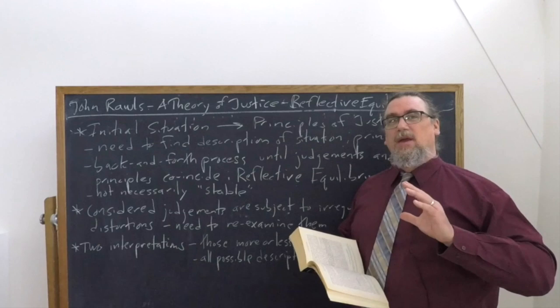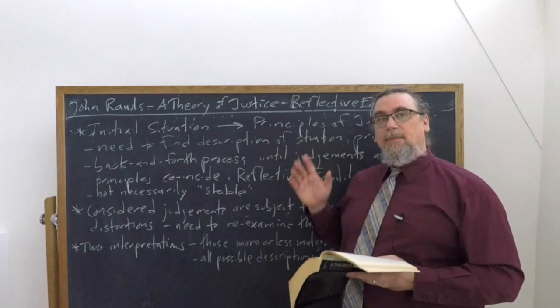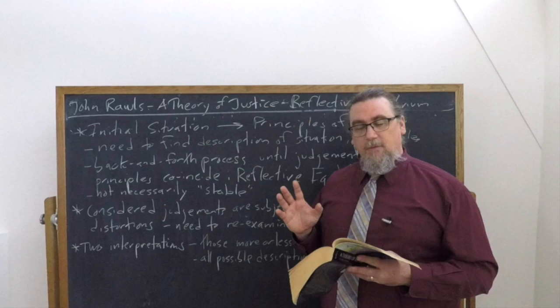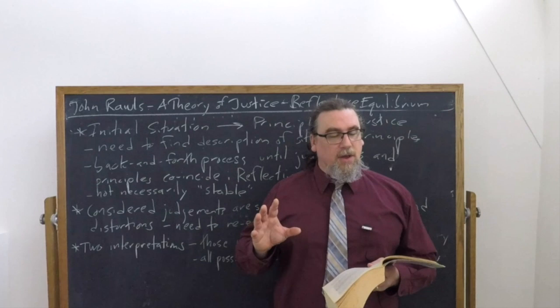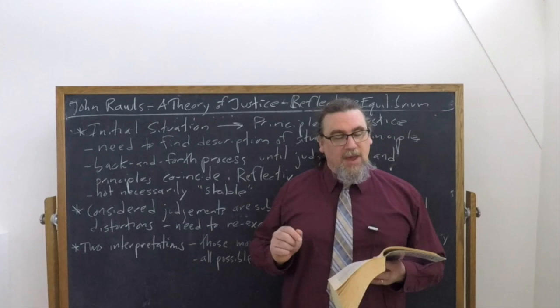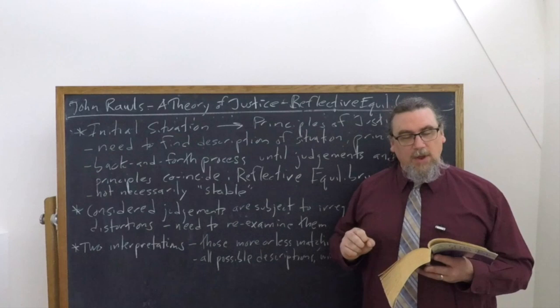He says that when it comes to deciding precisely how authority and income or goods ought to be justly distributed, it's tough to decide in an abstract a priori manner — we have to work this out through the application of the theory. So in searching for the most favored description of the initial situation, we work from both ends. We begin by describing it so it represents generally shared things we can all agree on and preferably weak conditions. We then see if these conditions are strong enough to yield a significant set of principles. If these principles match our considered convictions of justice, then so far, well and good.